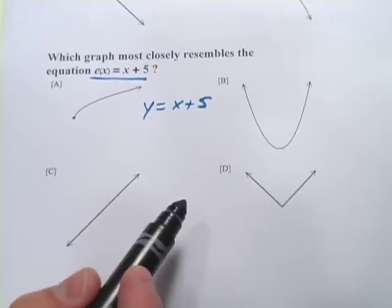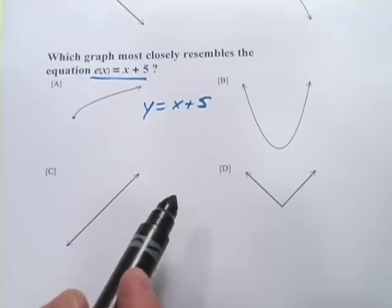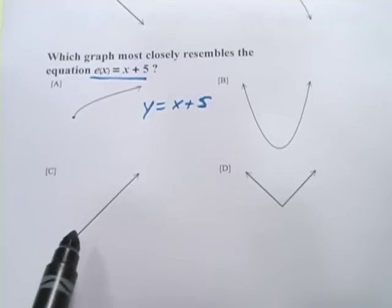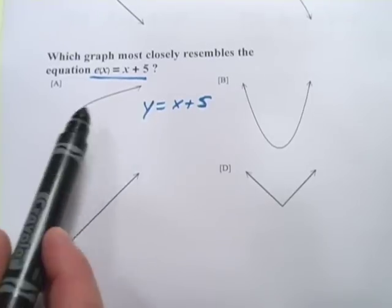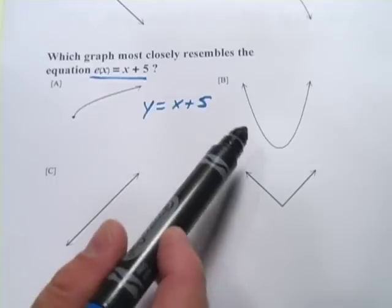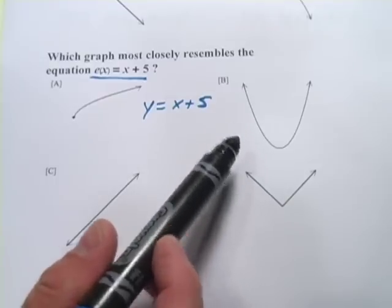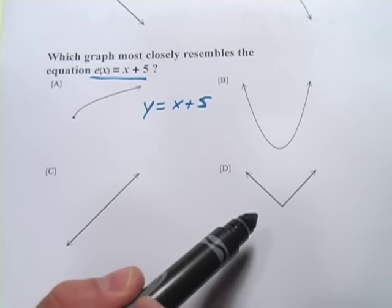is just a straight line. So this is a linear function, and the only one that would fit with that would be c. The other ones here, well, we've got a square root. We've got a quadratic, that's the y equals x squared, and we've got an absolute value function as well.